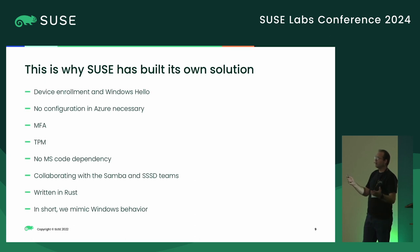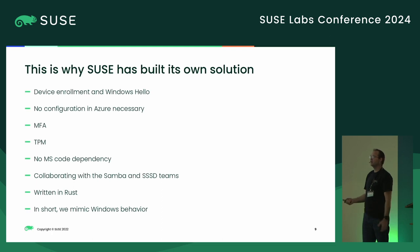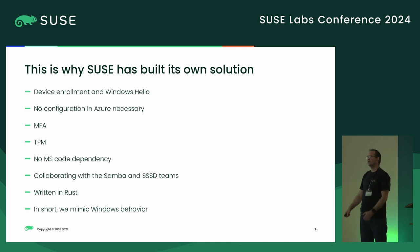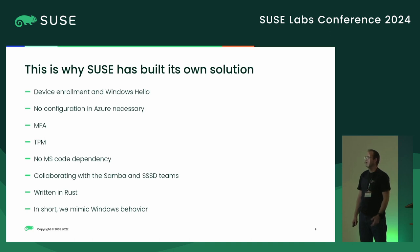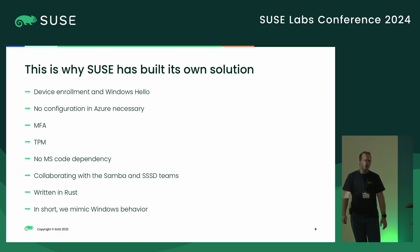This is why we decided to go our own way and build our own tool, so that we could have device enrollment and Windows Hello authentication. There's no Azure configuration necessary, we have MFA, we communicate with the TPM and TPM-bind all of the keys to secure them, there are no Microsoft code dependencies — it's all written in-house — and we're collaborating closely with the Samba and SSSD teams. It's written in Rust, and in short, we match the Windows behavior, which is the goal of the Samba project.